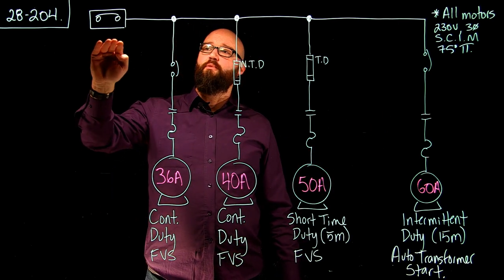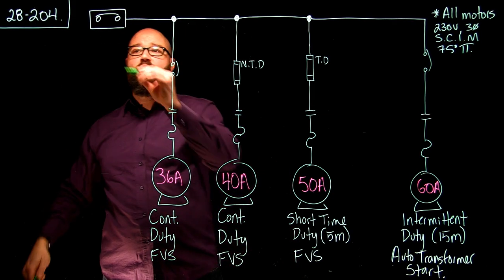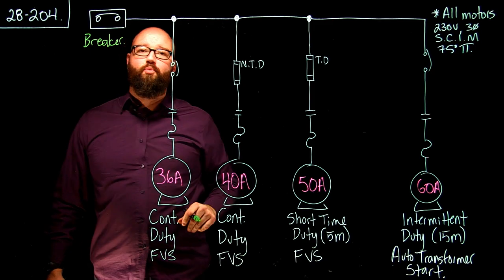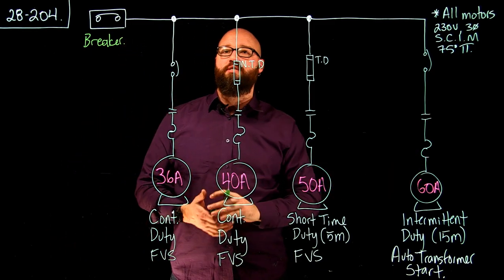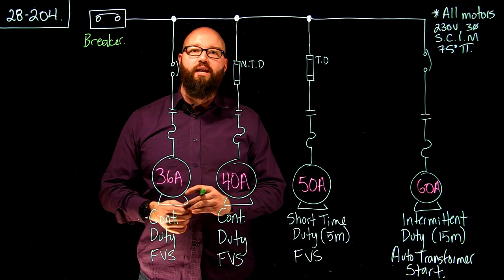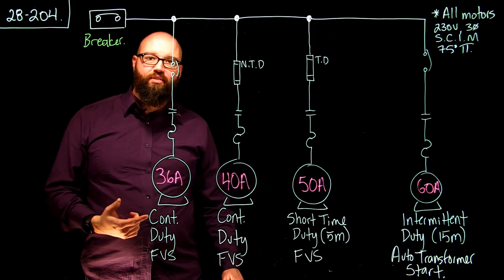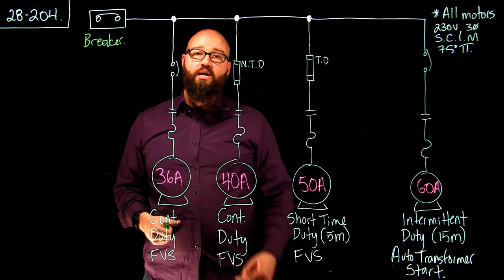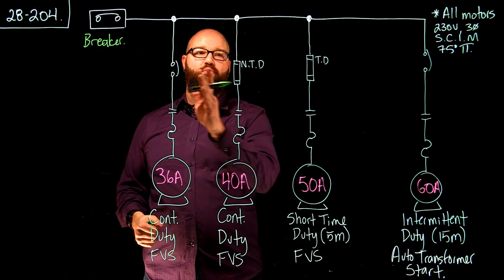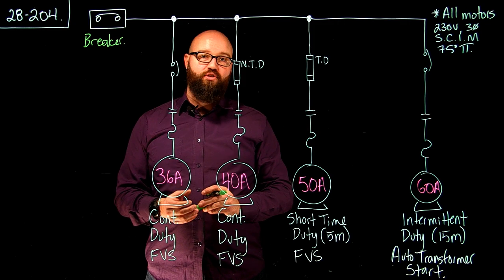We're going to use the multiplier for what the main overcurrent device is — in this case, we have a breaker. So every time I use Table 29 for each one of these individual motors, I'm going to apply the multiplier for a breaker. When we use Table 29, what we're concerned with is: what type of motor are we dealing with, what is the starting method of the motor, and what is the overcurrent protection device.